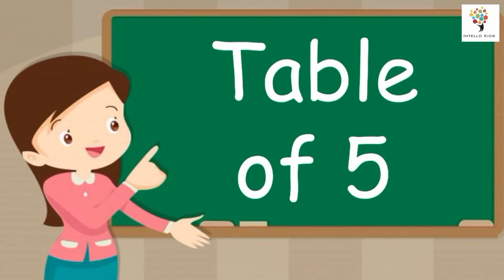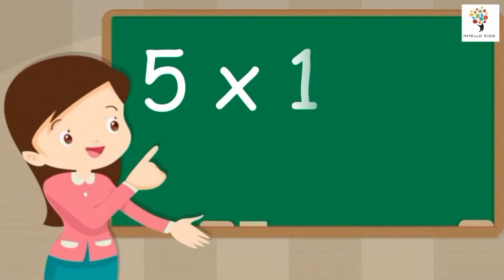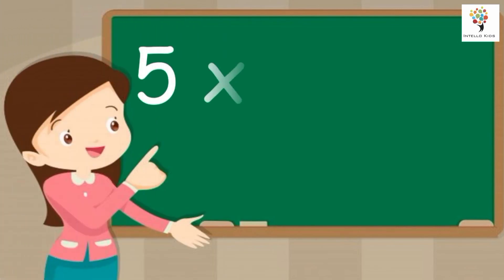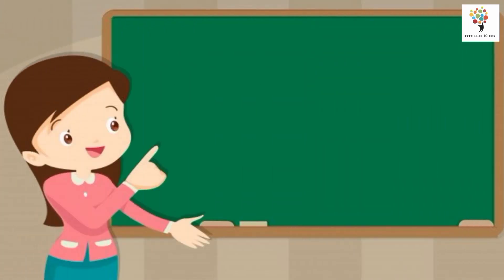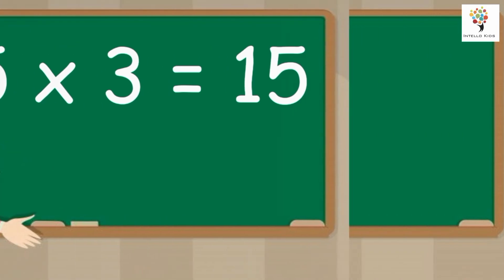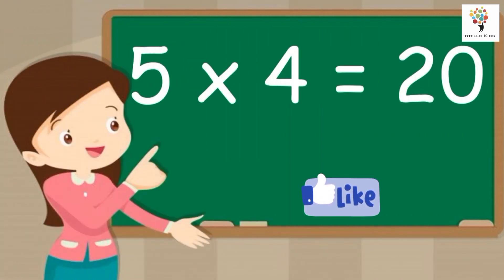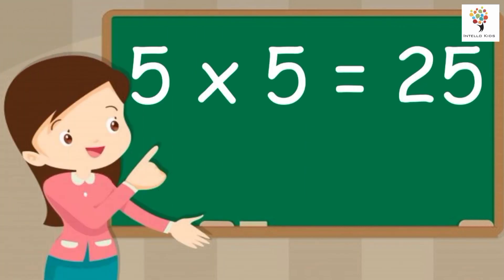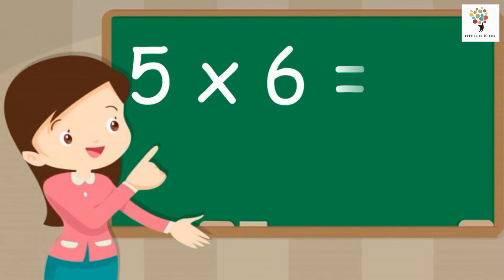Table of Five. Five ones are five. Five twos are ten. Five threes are fifteen. Five fours are twenty. Five fives are twenty-five.